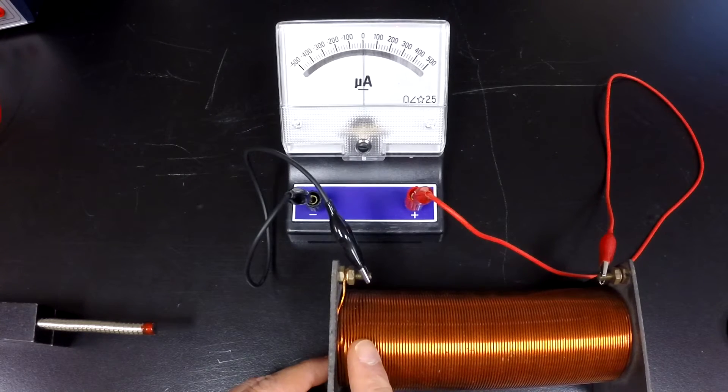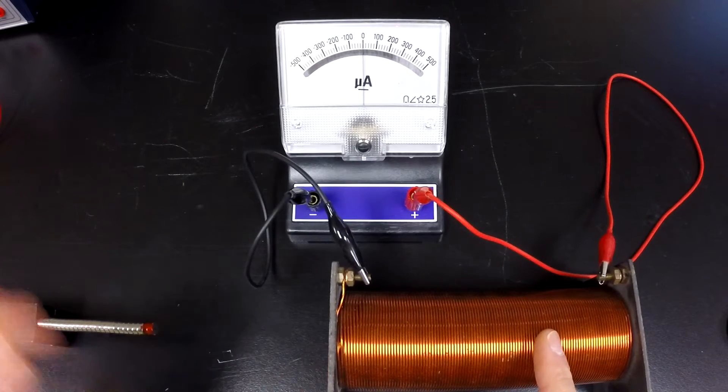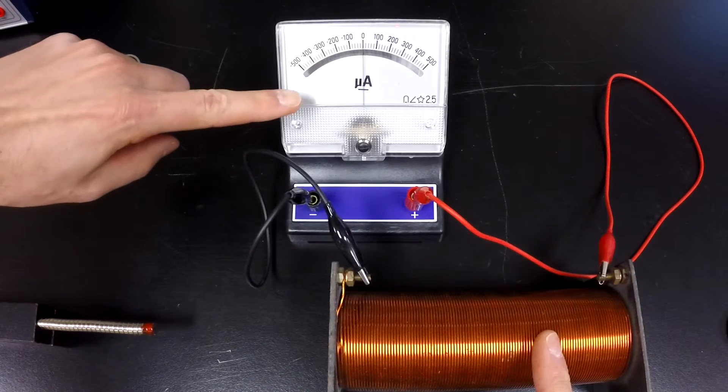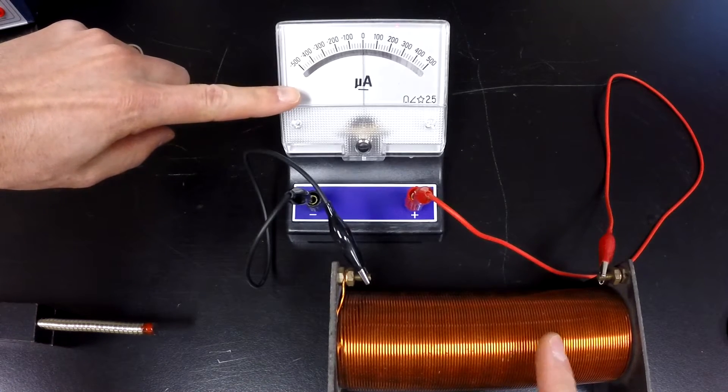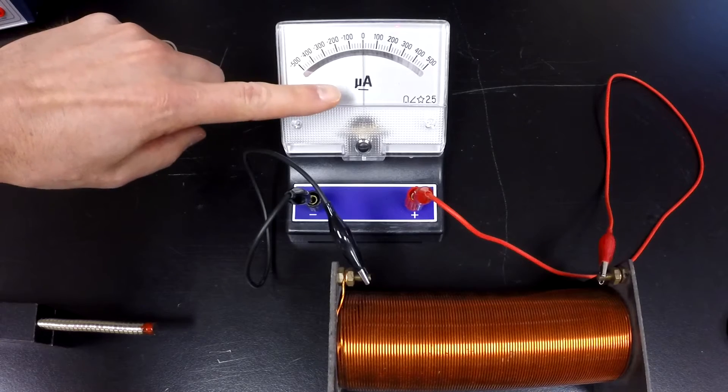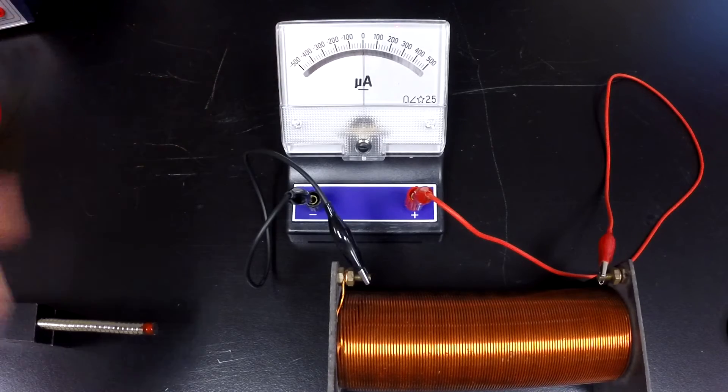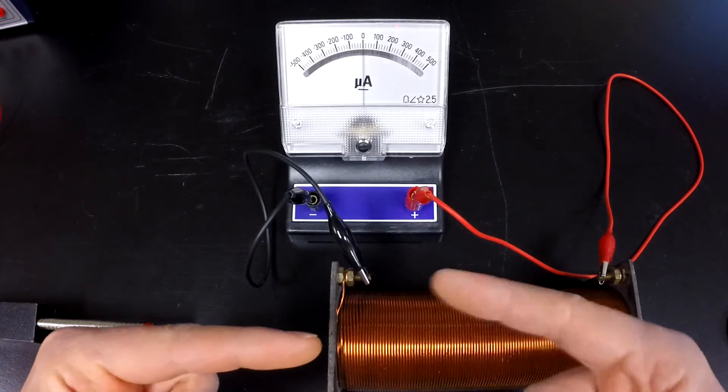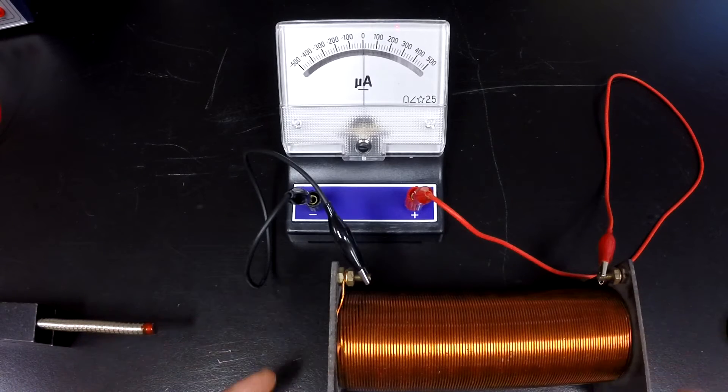So here I have a solenoid, essentially a coil of conductive wires, hooked up to a galvanometer. It's just something that measures current in microamps, and it can swing to the left or the right to indicate the direction of current flow through all of the loops in the solenoid.